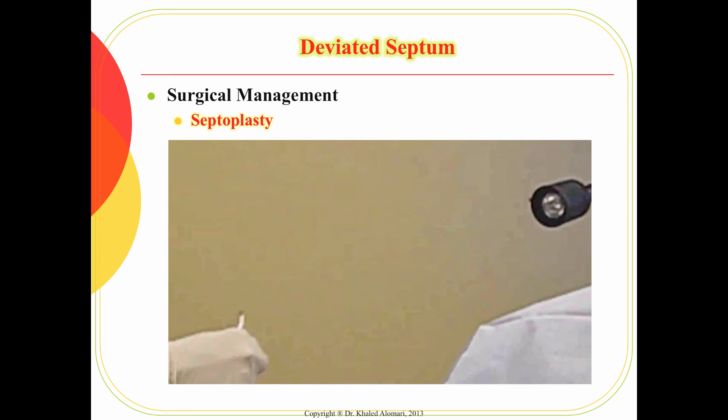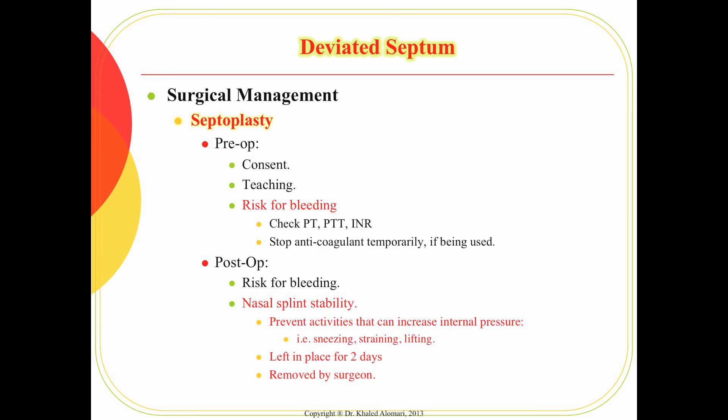As for nursing care, pre-op is pretty standard: consent and teaching. There is a risk for bleeding since there is a cut made during the procedure. We always need to assess this risk for bleeding, especially for patients taking anticoagulants. Any patient on anticoagulant agents needs to temporarily stop that medication, depending on the agent. We also want to check the PT, PTT, and INR.